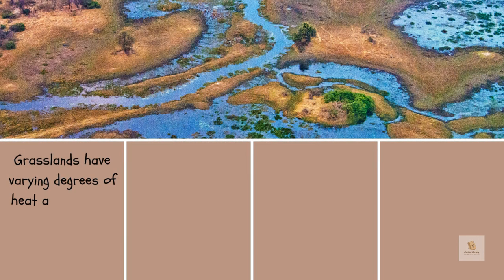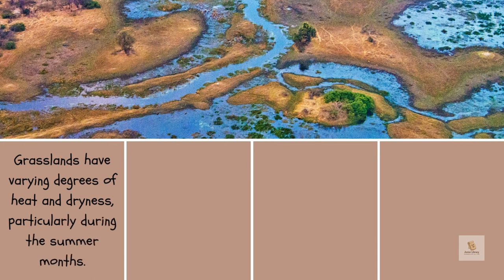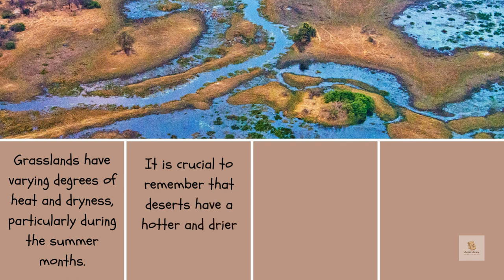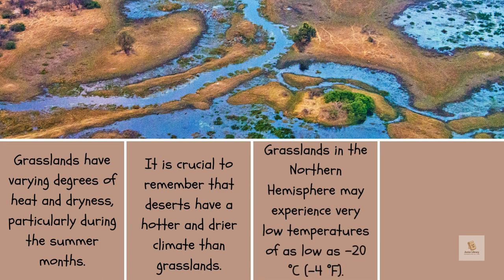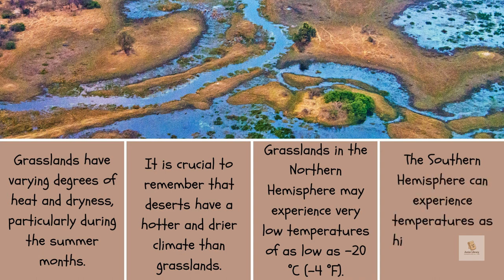Grasslands have varying degrees of heat and dryness, particularly during the summer months. It is crucial to remember that deserts have a hotter and drier climate than grasslands. Grasslands in the northern hemisphere may experience very low temperatures of as low as minus 20 degrees Celsius (minus 4 degrees Fahrenheit), while the southern hemisphere can experience temperatures as high as 30 degrees Celsius (86 degrees Fahrenheit).